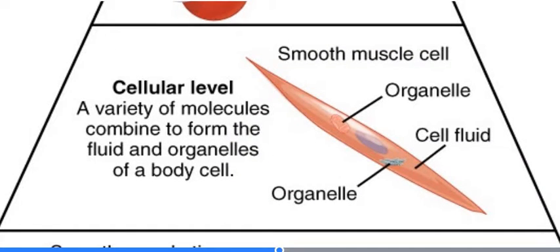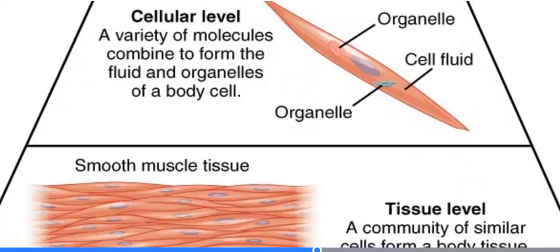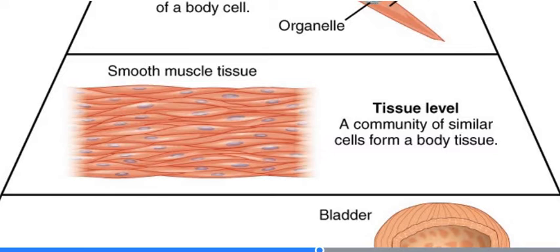The next level of organization is the cellular level, which is where those macromolecules come together, often forming small structures within the cell called organelles. Cells will combine together along with macromolecules that may be secreted by those cells to have a common function, and we call that a tissue. So the next level of organization is the tissue level.